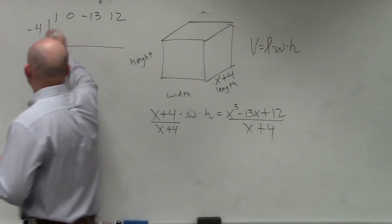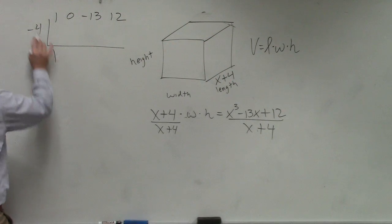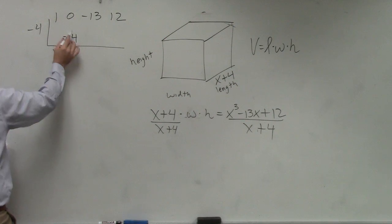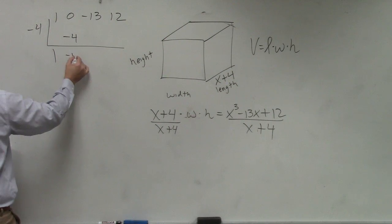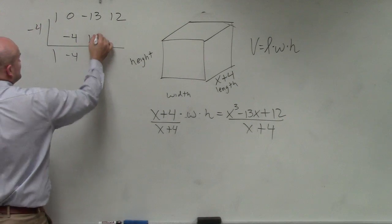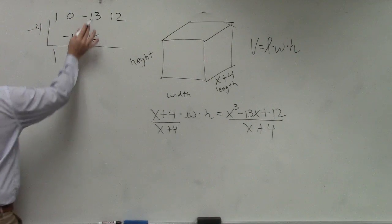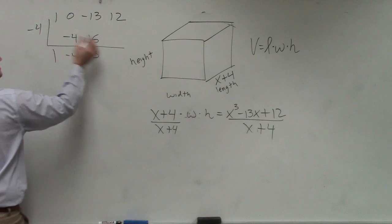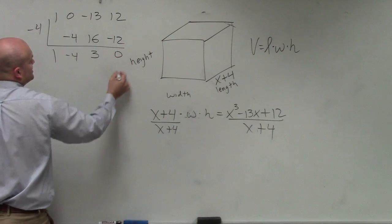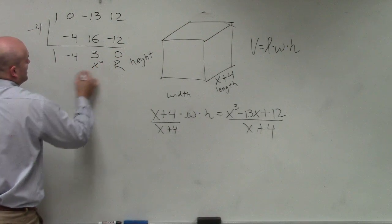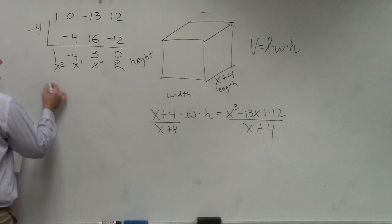I bring down the first term, 1, multiply my diagonals. 1 times negative 4 is negative 4; add on my verticals: 0 plus negative 4 is negative 4. Negative 4 times negative 4 is positive 16. Negative 13 plus 16 is positive 3. 3 times negative 4 is negative 12, remainder 0. So the result gives us: remainder, constant, linear, quadratic.